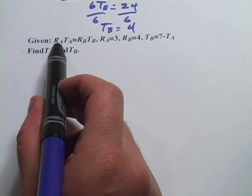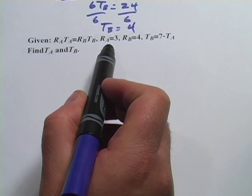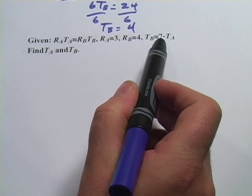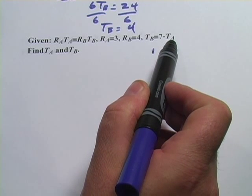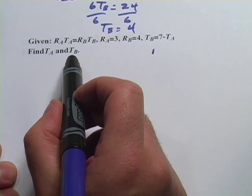This one says r sub a times t sub a equals r sub b times t sub b. r sub a equals 3, r sub b equals 4, t sub b equals 7 minus t sub a. They want us to find t sub a and t sub b.